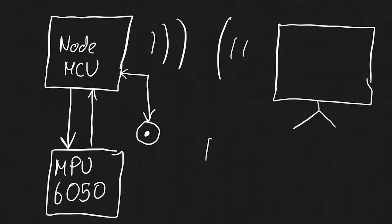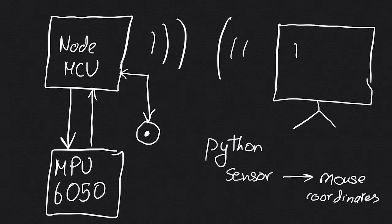The computer runs a Python script which connects to the web socket hosted by the NodeMCU and converts the sensor data into tangible mouse coordinates. This allows the mouse to move on the screen.